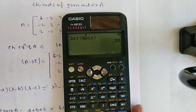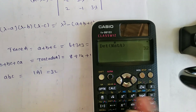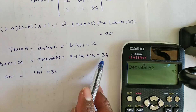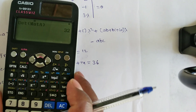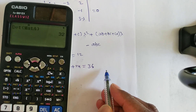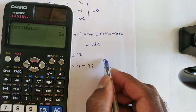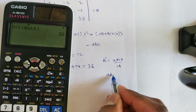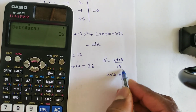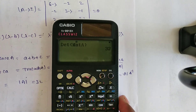We got determinant of mat A = 32. Now we verify trace of adjoint A = 36 using the calculator. Since A⁻¹ = adj(A)/det(A), we get adj(A) = det(A) × A⁻¹. So compute mat A inverse multiplied by 32 to get the adjoint matrix.